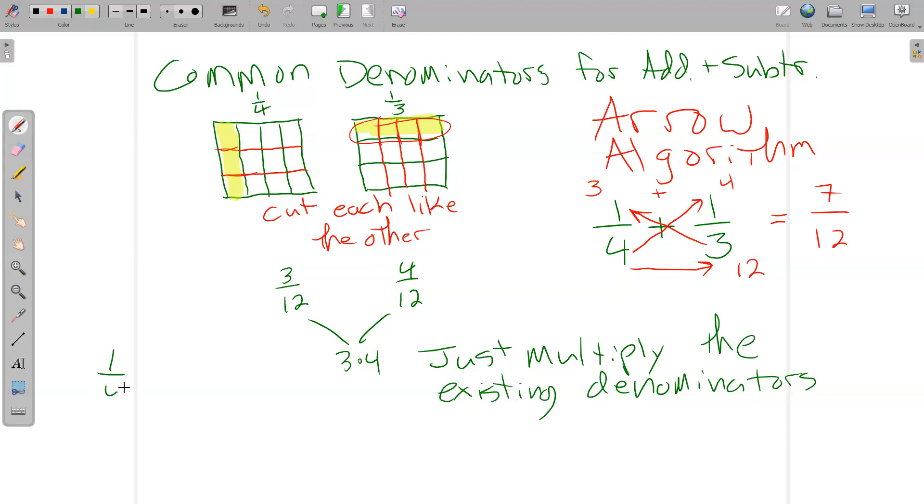I guess I need to reverse it. One third minus one fourth. How much bigger is a third than a fourth? That same algorithm works. Three times four is 12. Four times one is four. Three times one is three. We are subtracting. Four minus three is one twelfth. This over here is one twelfth bigger than that one over there.